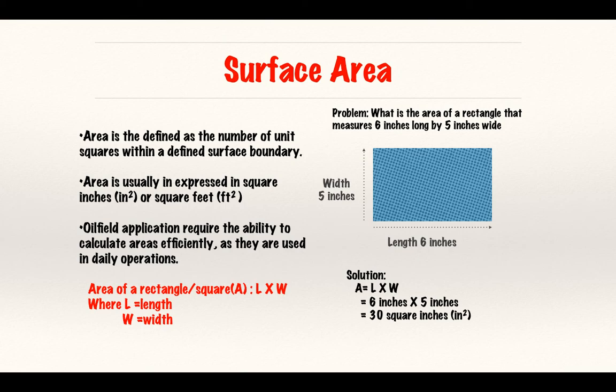The basic formula for the area of a rectangle or square is length times width, where L is length and W is width. The problem is: what is the area of a rectangle that measures 6 inches long by 5 inches wide? 6 times 5 gives me 30 square inches.